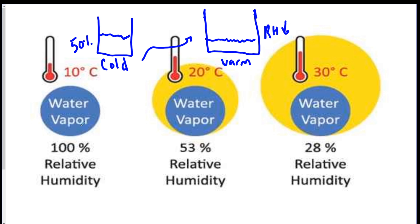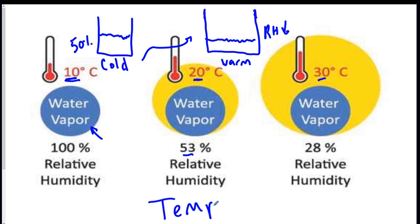This picture shows 100% relative humidity — it's completely full with no empty space. If I heat the air from 10°C to 20°C, that same amount of water vapor only takes up half the space because I made there be more space, so relative humidity drops to 53%. And if I heat it to 30°C, the water vapor only takes up 28%. The moral of the story: as temperature increases, relative humidity drops because there's more space.